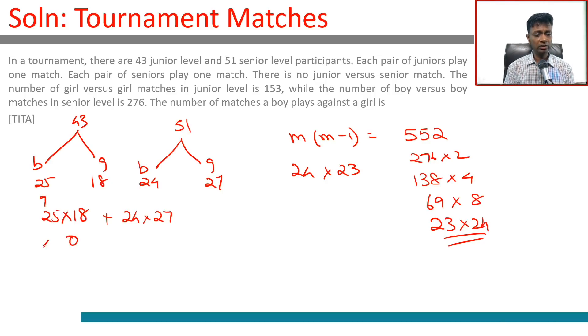25 into 18 plus 24 into 27. 25 into 18, 5s are 90, 36, 45, so 450. Plus 24 into 27, 24 7s are 168, 48 plus 16, 64. 450 plus 648, 1098.